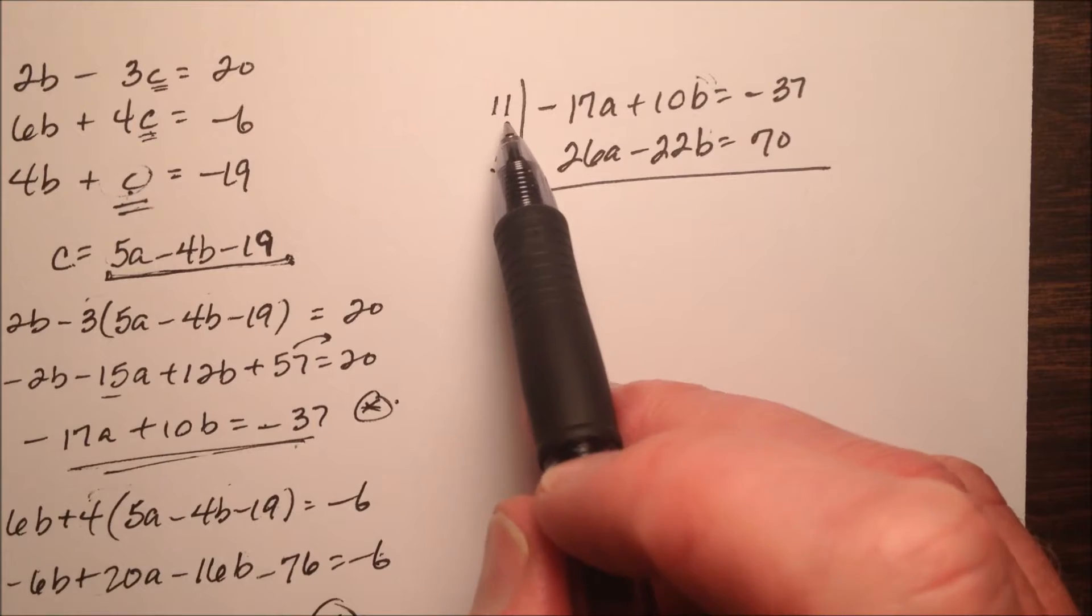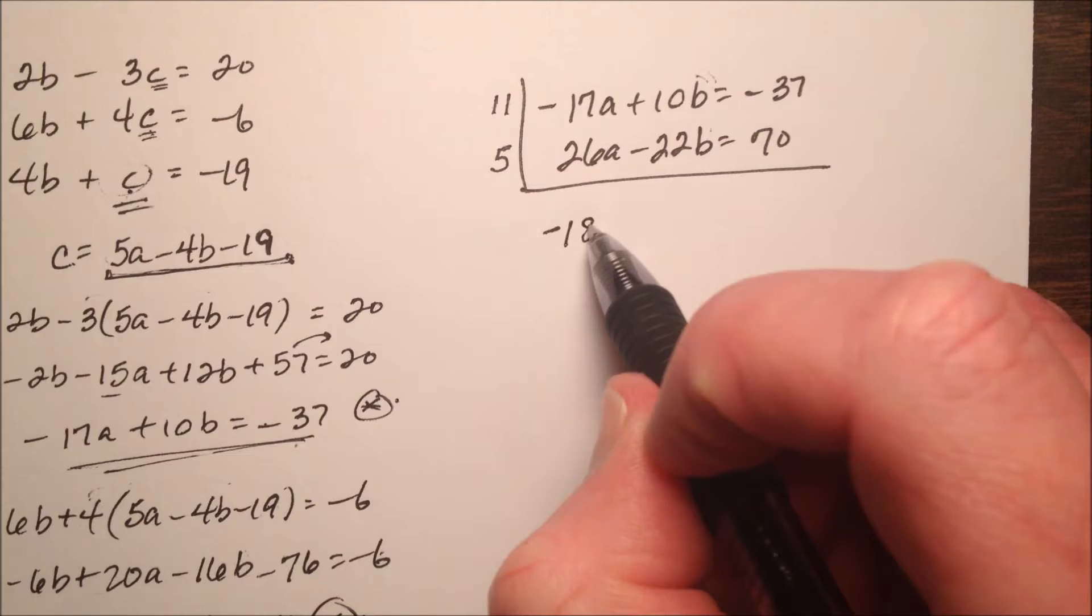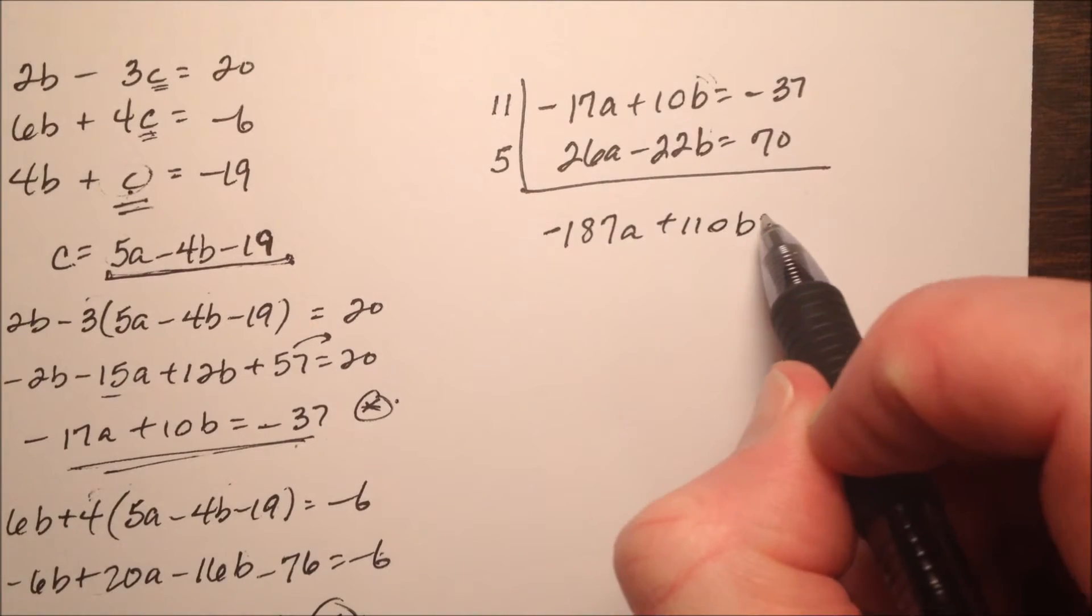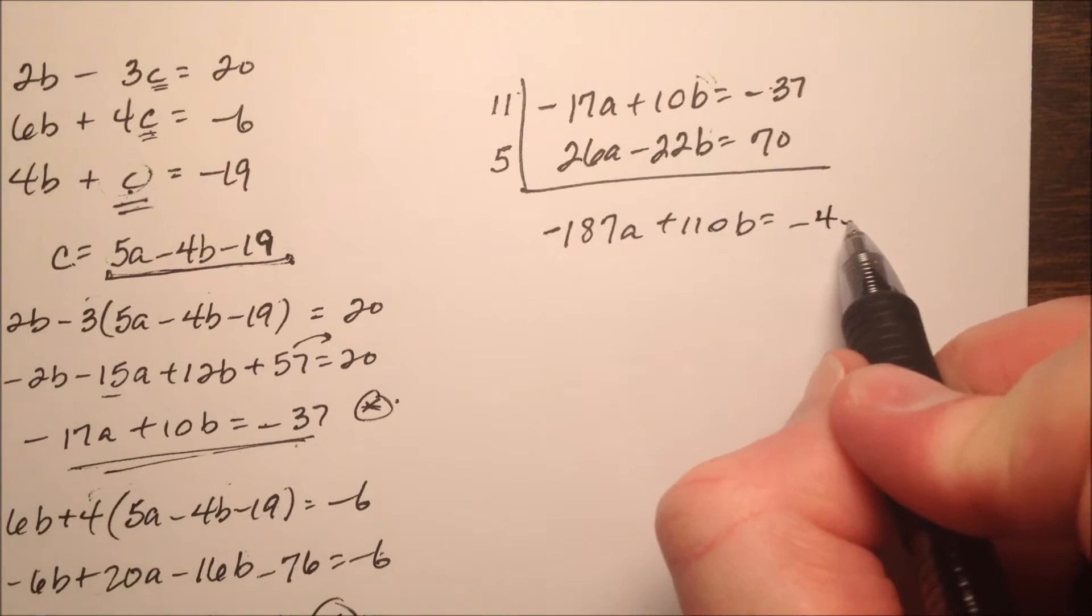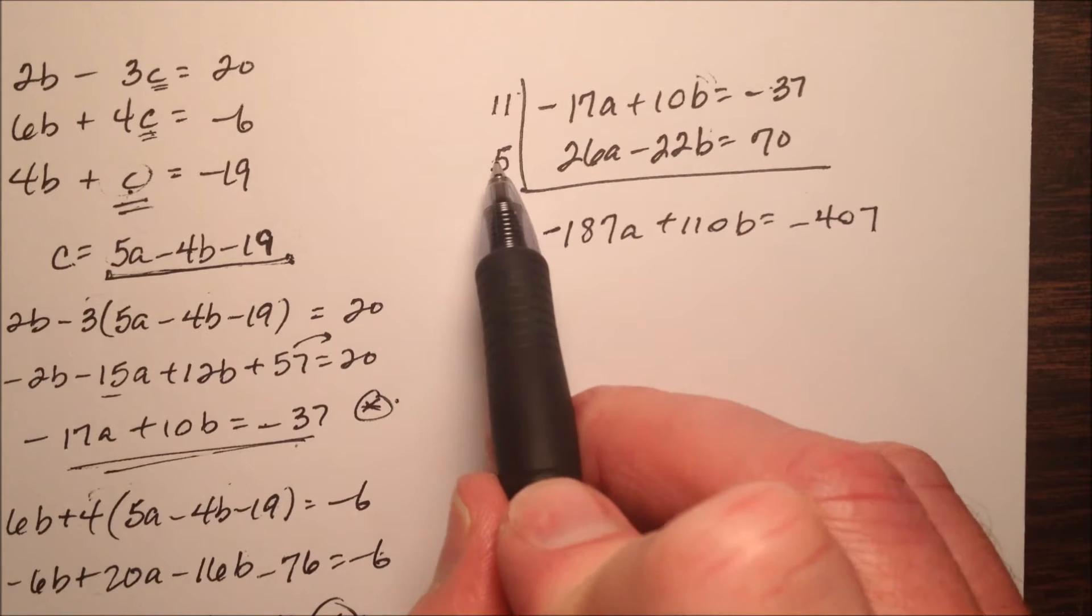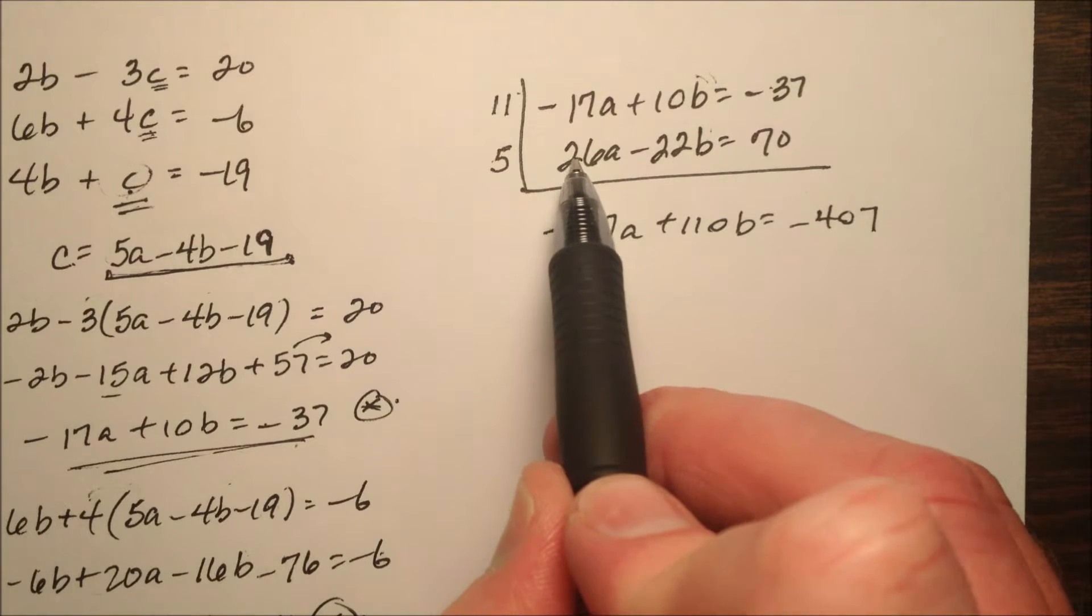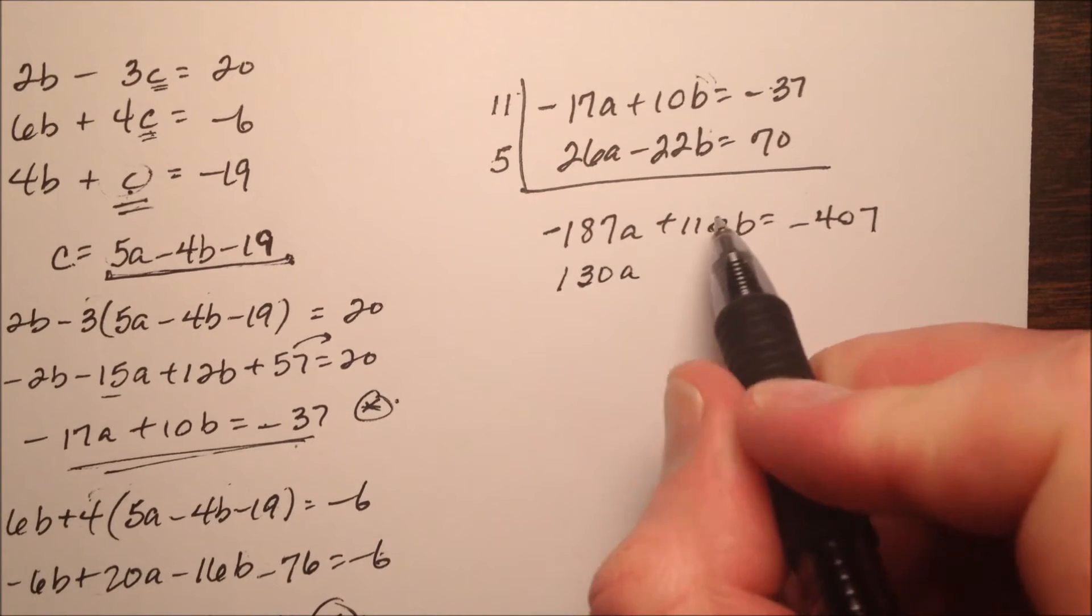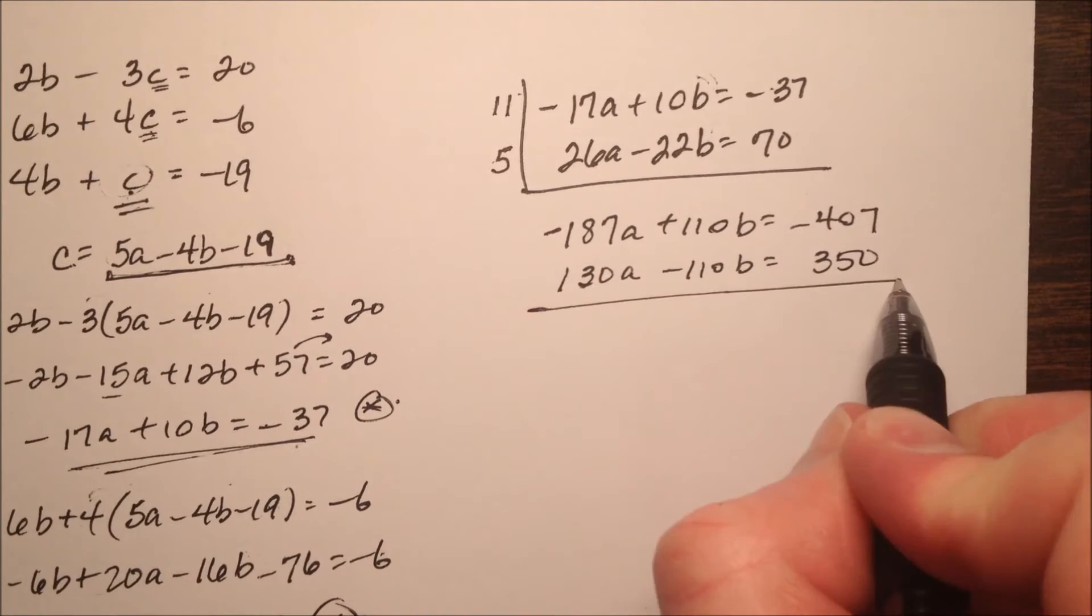So multiplication by 11 is pretty nice. So 11 times 17, that's going to end up being a negative 187a, and then plus 110b, and then 11 times 37 will be a negative 407. When I run a 5 through here, multiplication by 5 is easy. I'm going to cut it in half and add a 0. So half of 26 is 13, and then add a 0, so 130a minus 110b, and that's going to be 350 there.